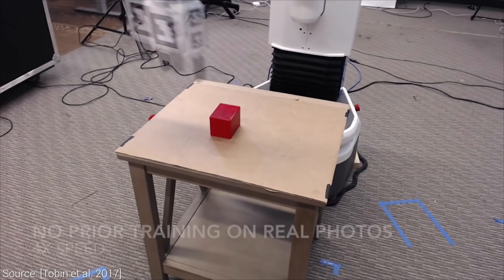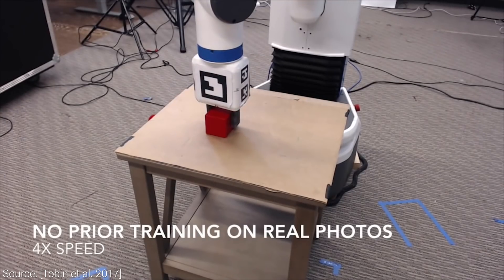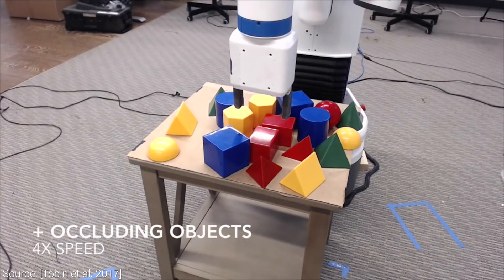This work from OpenAI goes by the name Domain Randomization and is about training an AI on relatively crude computer simulations in a way that can be transferred to the real world.